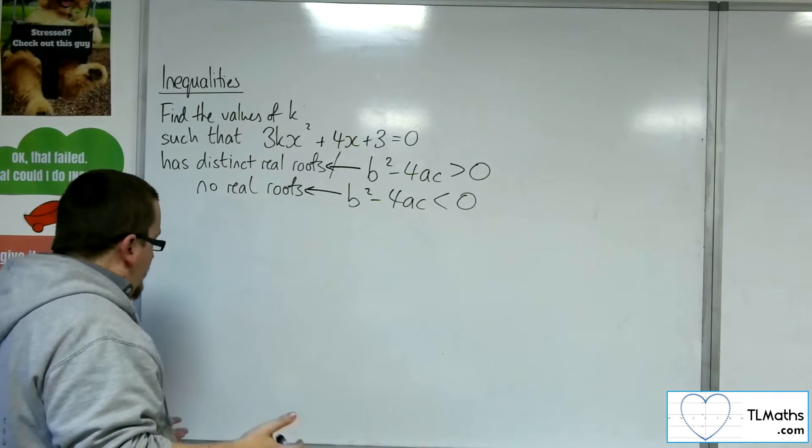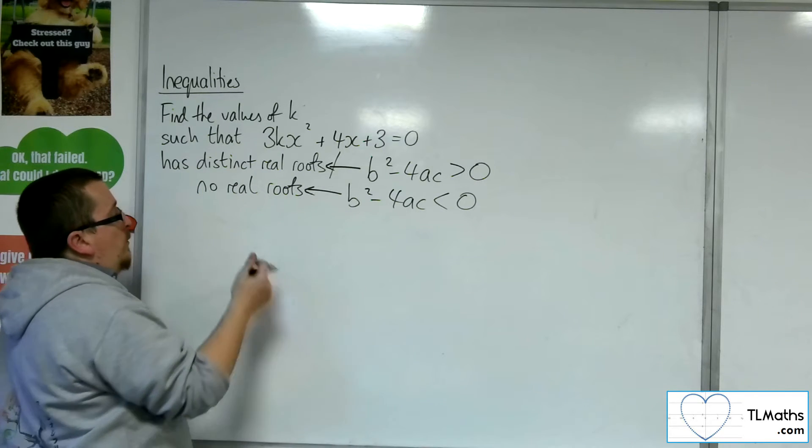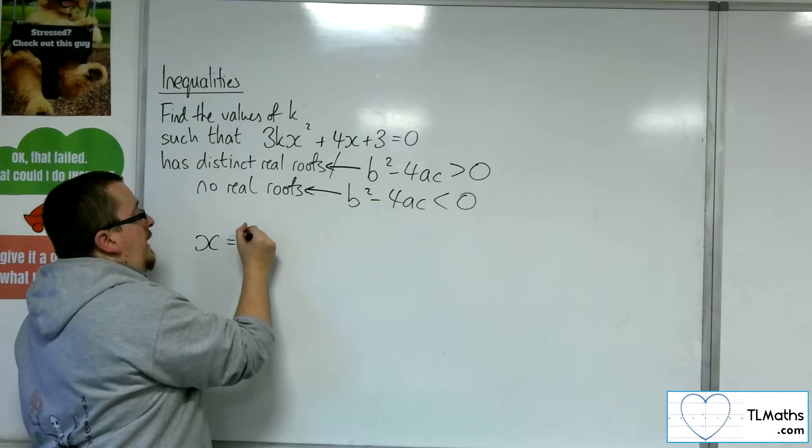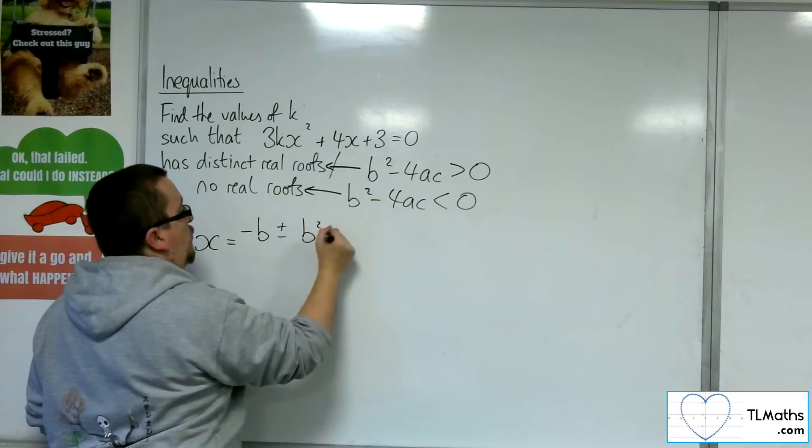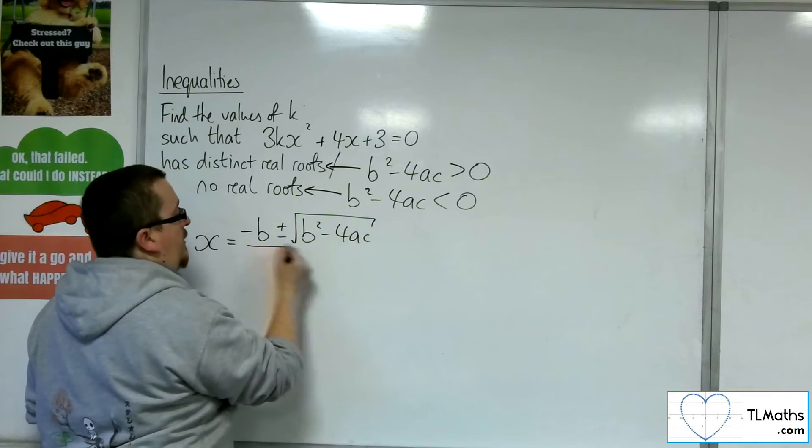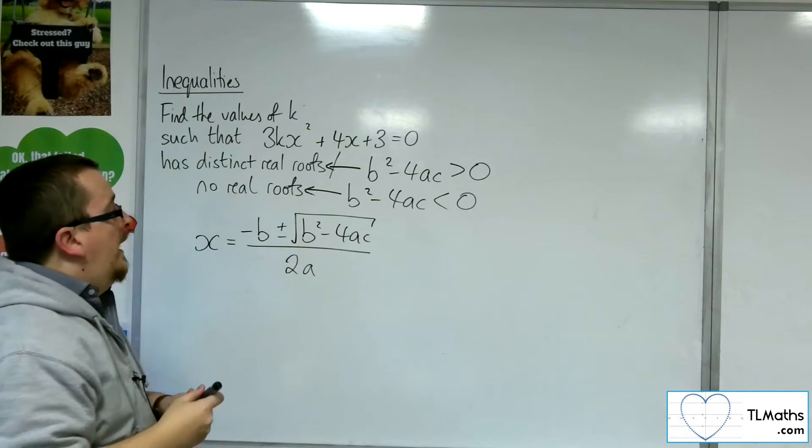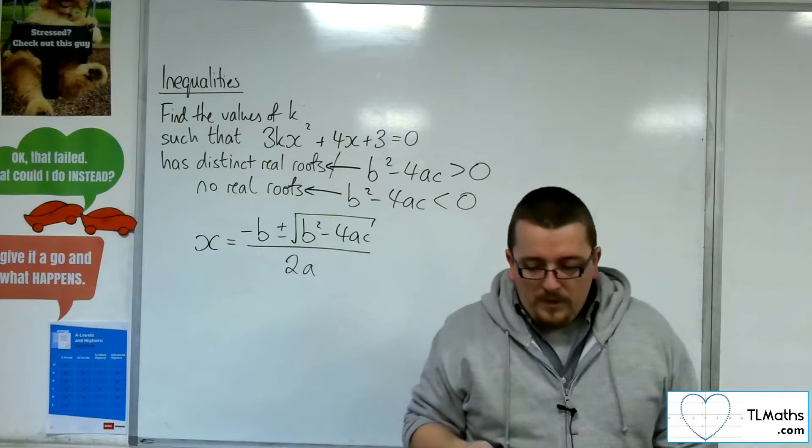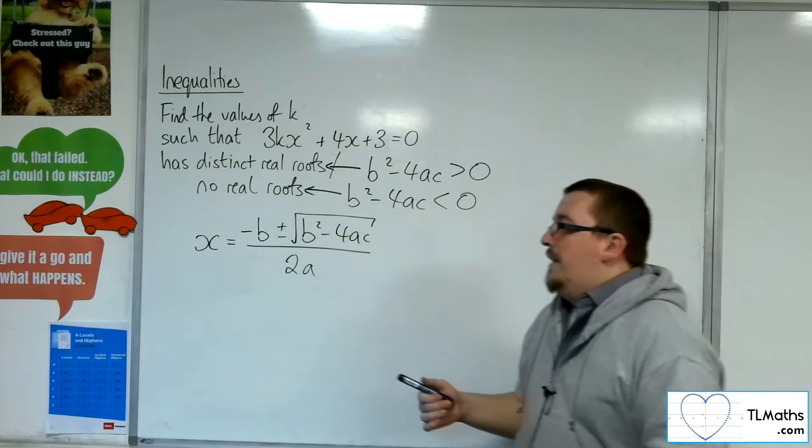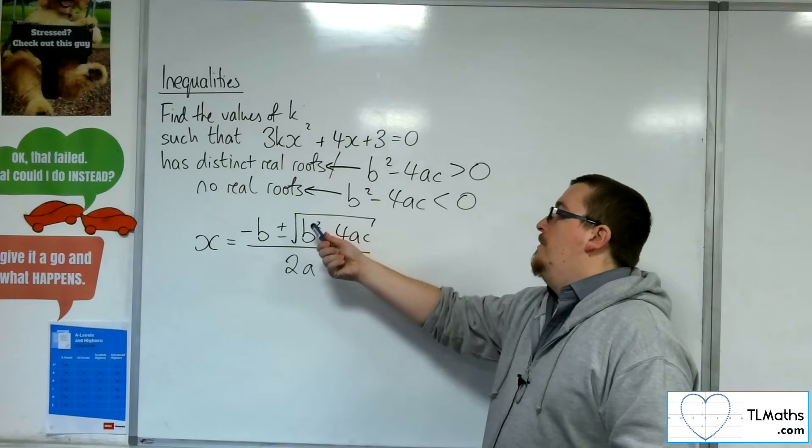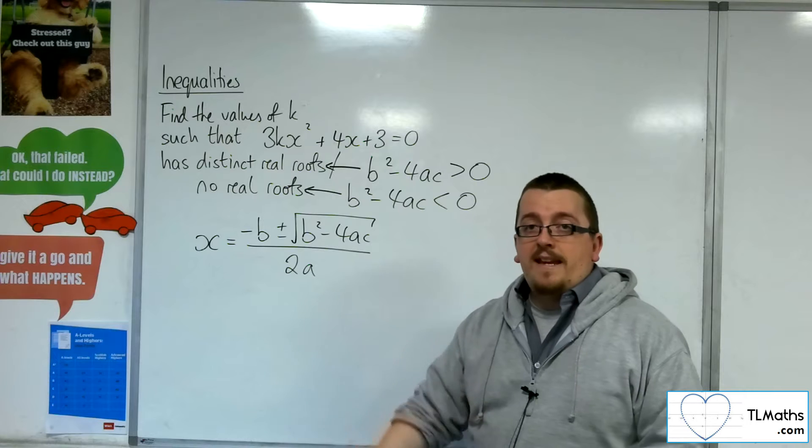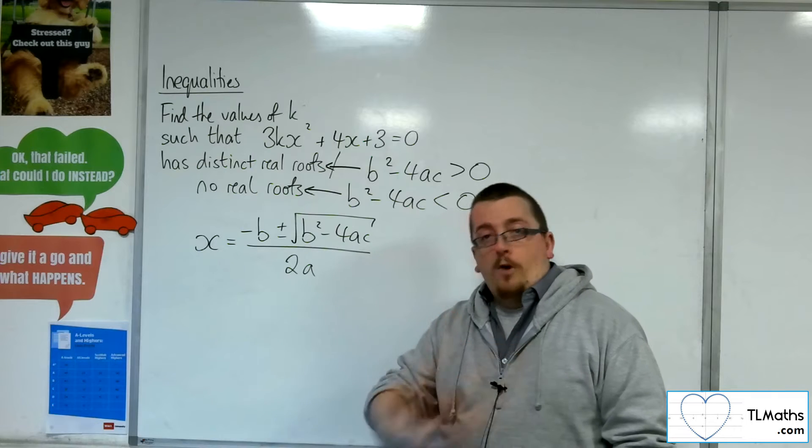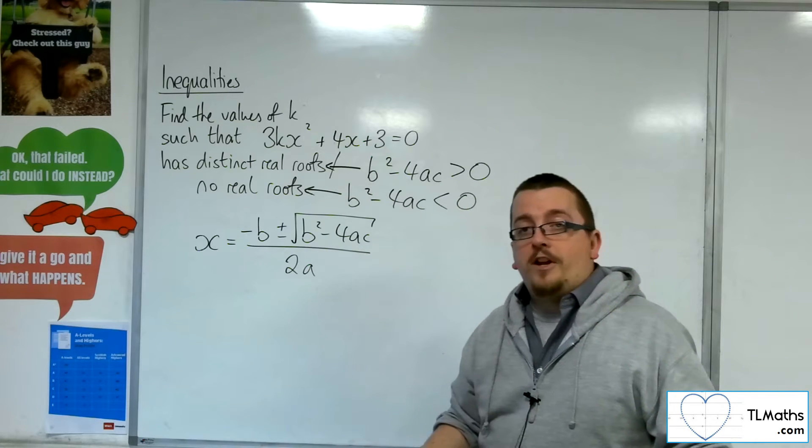Now the reason for this is that for a quadratic equation, we know that the solutions can be written using the quadratic formula as minus b plus or minus the square root of b squared minus 4ac all over 2a. And the thing is, it's about this square root. Now square roots behave in the sense that if the number that is underneath the square root is negative, we cannot square root a negative number without going into complex and imaginary roots, which is beyond the scope of this course.